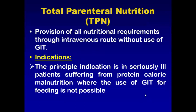The second type of surgical nutrition is total parenteral nutrition. The definition of total parenteral nutrition is the provision of all nutritional requirements through an intravenous route without use of the GI tract, when the use of the GI tract for feeding is not possible.